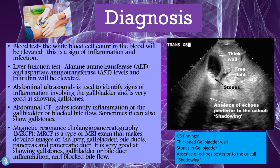We can also use magnetic resonance cholangiopancreatography, called MRCP. The MRCP is a type of MRI exam that makes detailed images of the liver, gallbladder, bile ducts, pancreas, and the pancreatic duct. It is very good at showing gallstones, gallbladder or bile duct inflammation, and blocked bile flow. These are all the diagnostic techniques we can use to diagnose cholecystitis.